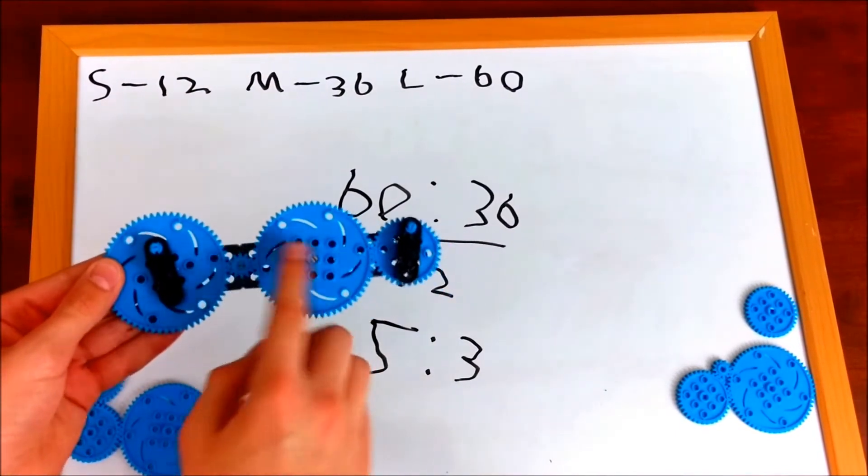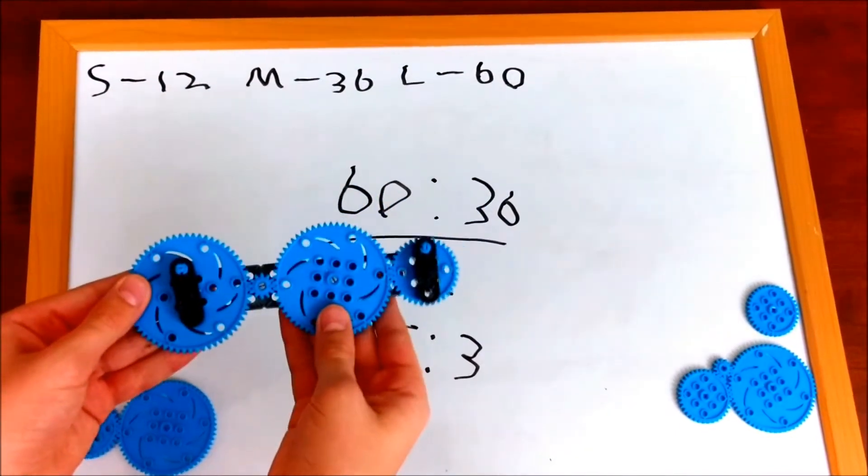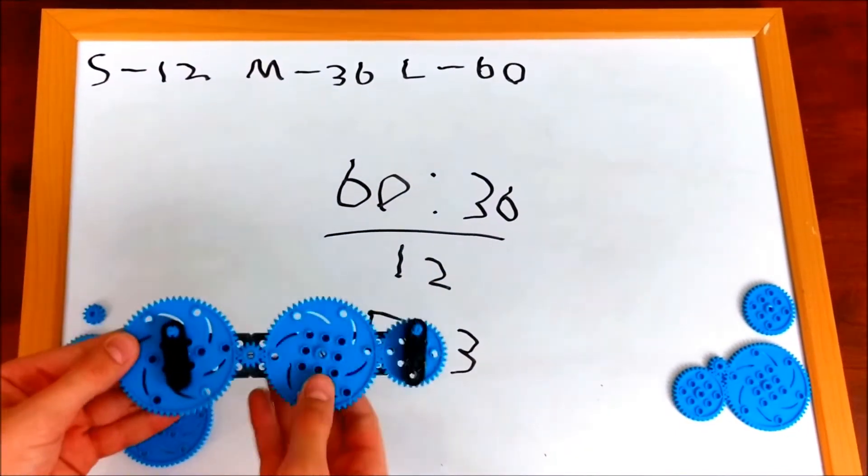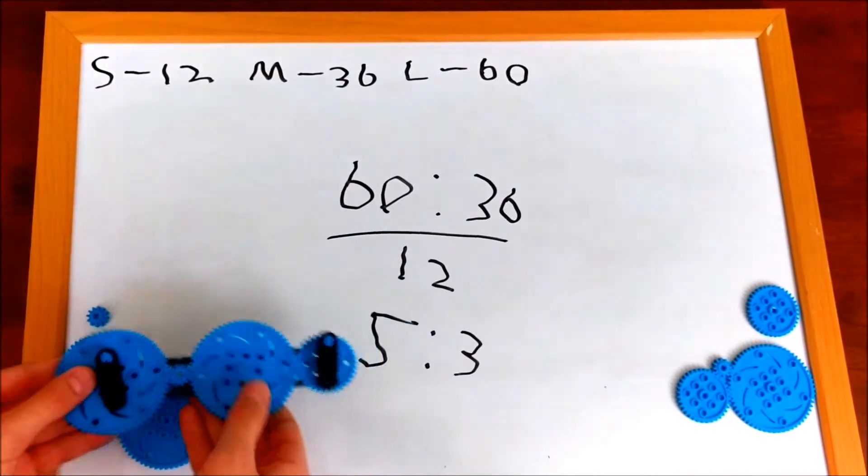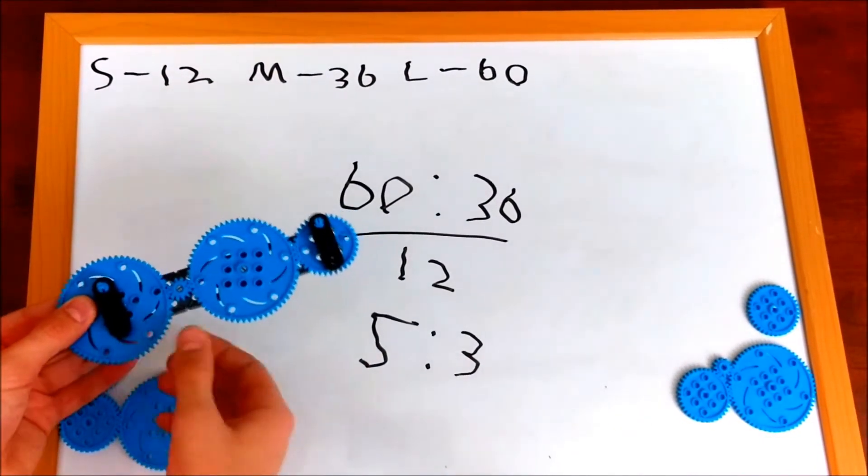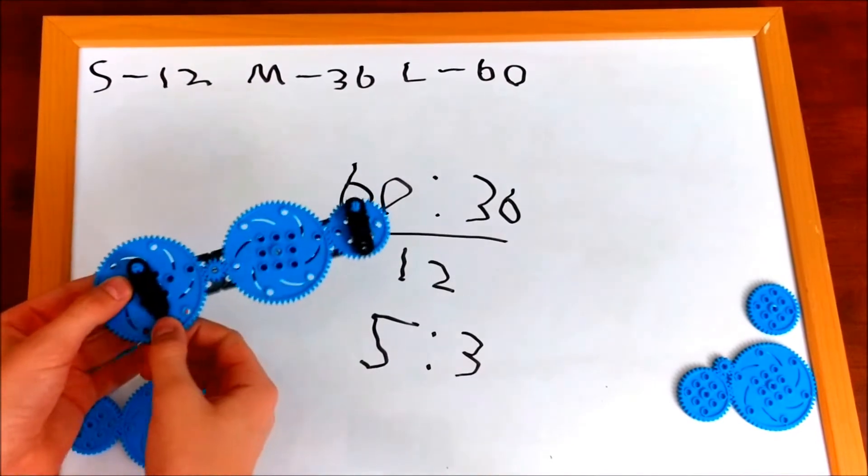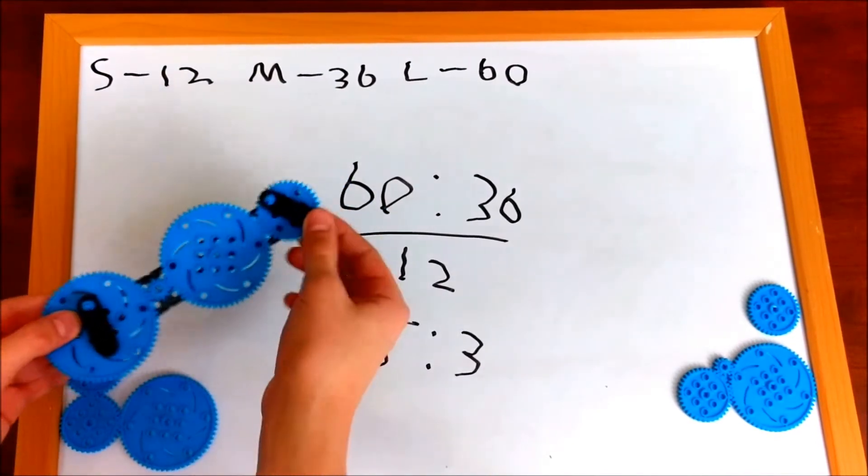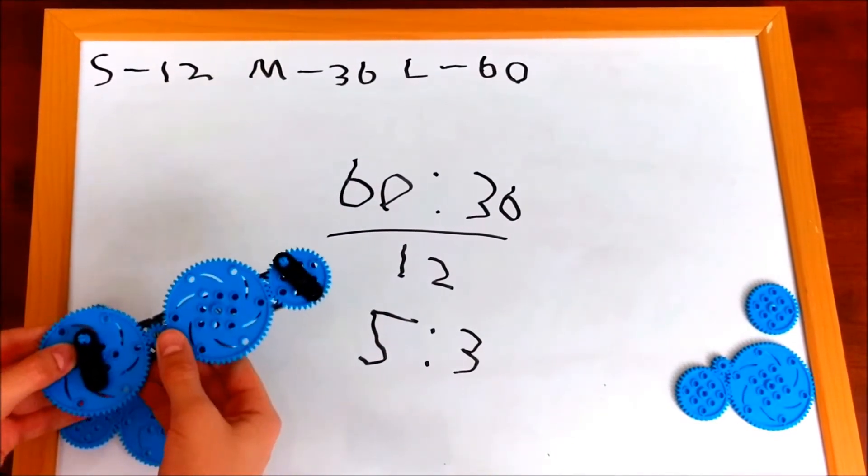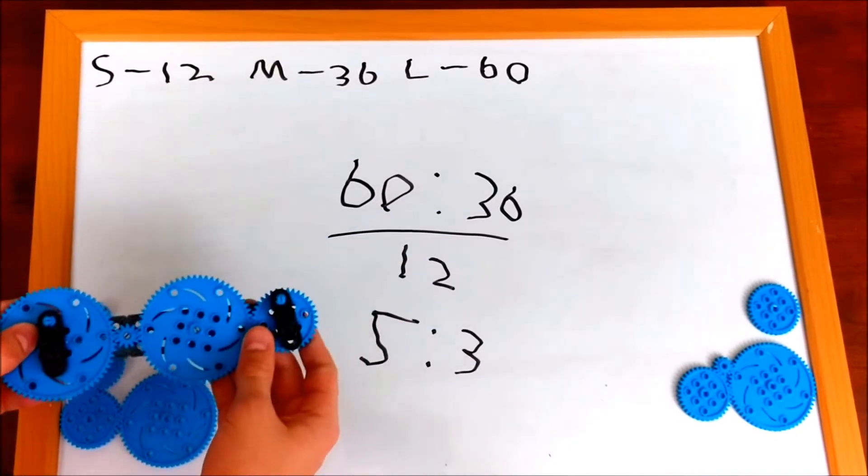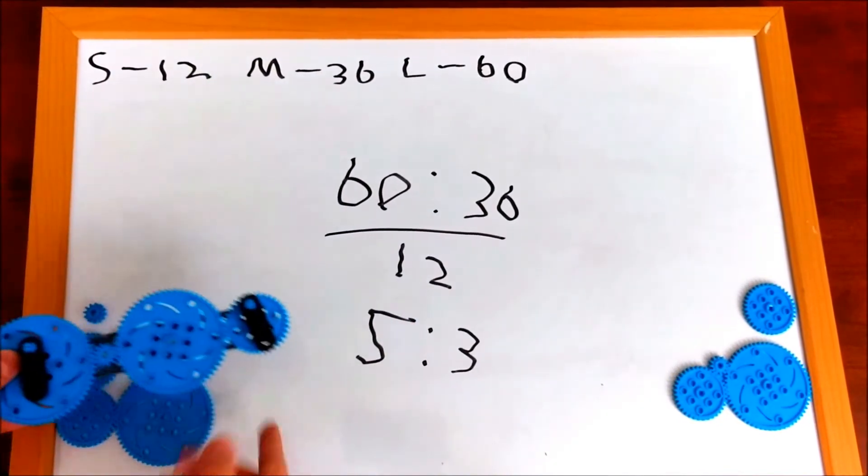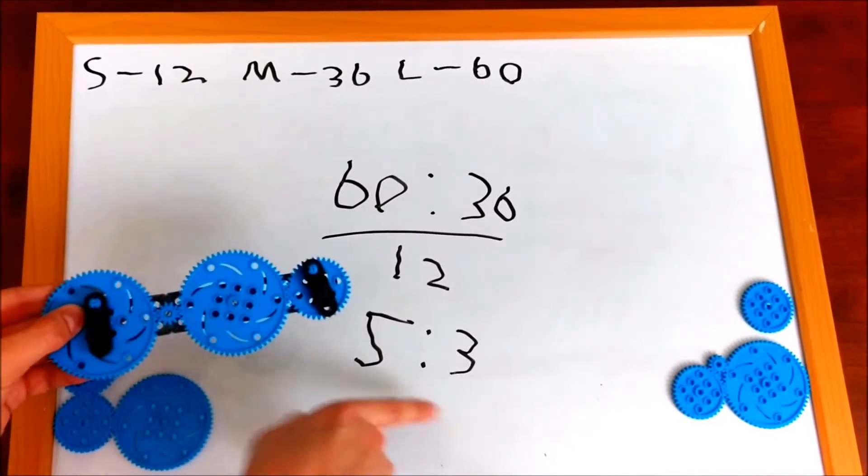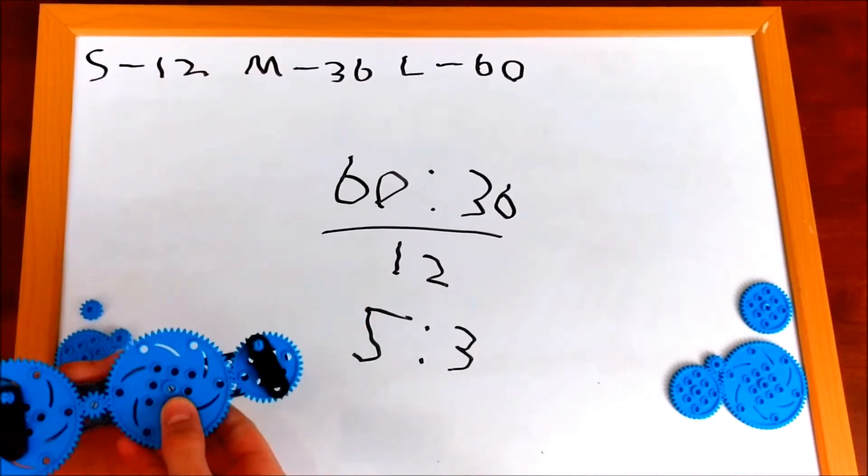This also has the same weird gear configuration, where it's completely random in the middle. And so, the first and the last gear are 60 and 36. So, since they're both divisible by 12, you divide that, and you get a 5 to 3 ratio.